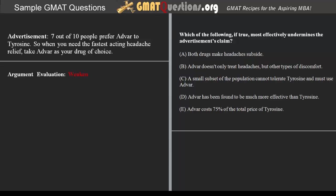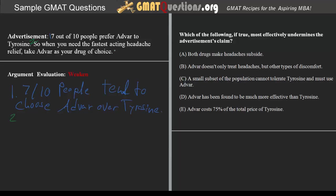In this case, we're being asked to weaken the claim. Let's analyze the passage and determine what logic is at work which allows the advertiser to make the claim that one should choose one drug over another. In the first part we get that seven out of ten people prefer Advar to Tyrosin.